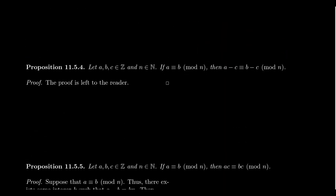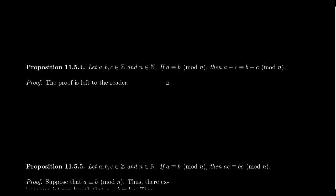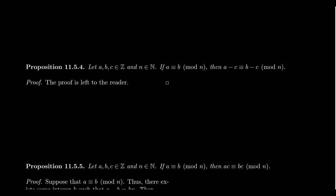A similar property holds for subtraction: if A is congruent to B modulo N, then A minus C is congruent to B minus C mod N. I'll leave the proof to the viewer, since it's so similar to the previous one that walking through it again won't help as much as writing it yourself. So integer congruence is invariant under both addition and subtraction.